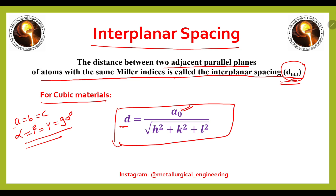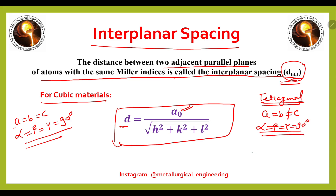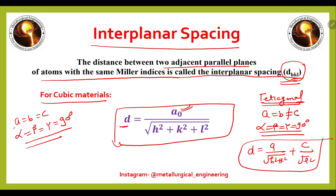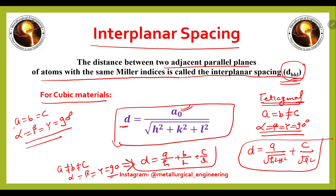For other crystal systems: in tetragonal (a = b ≠ c, α = β = γ = 90°), d is written incorporating both a and c as: 1/d² = (h² + k²)/a² + l²/c². For orthorhombic (a ≠ b ≠ c, α = β = γ = 90°), d is written incorporating a, b, and c separately with h/a, k/b, and l/c terms. This shows how interplanar spacing correlates with lattice parameters for different crystal systems.